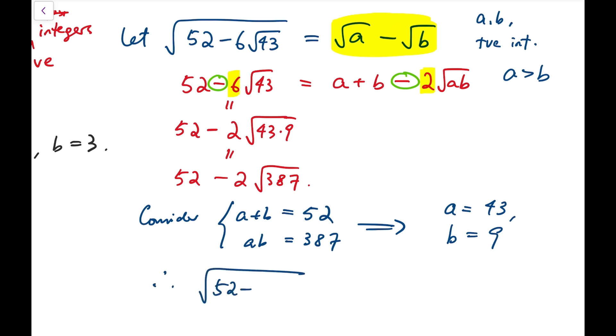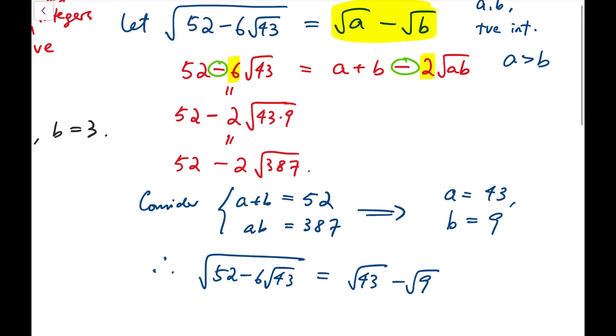So therefore square root of 52 minus 6 root 43 will then be equal to square root of 43 minus square root of 9, and that means it's equal to root 43 minus 3. So I hope these two examples will help you understand how do we simplify these kind of surds. Thank you.